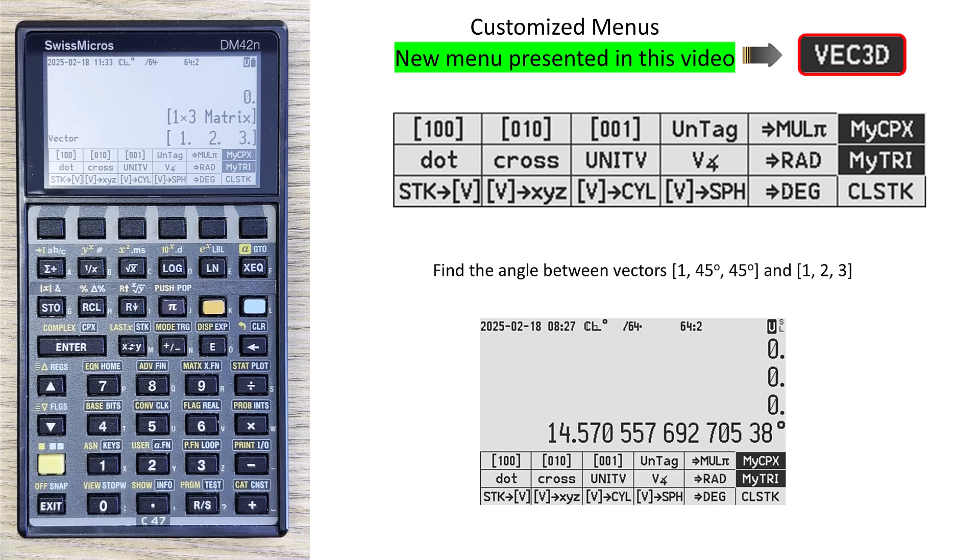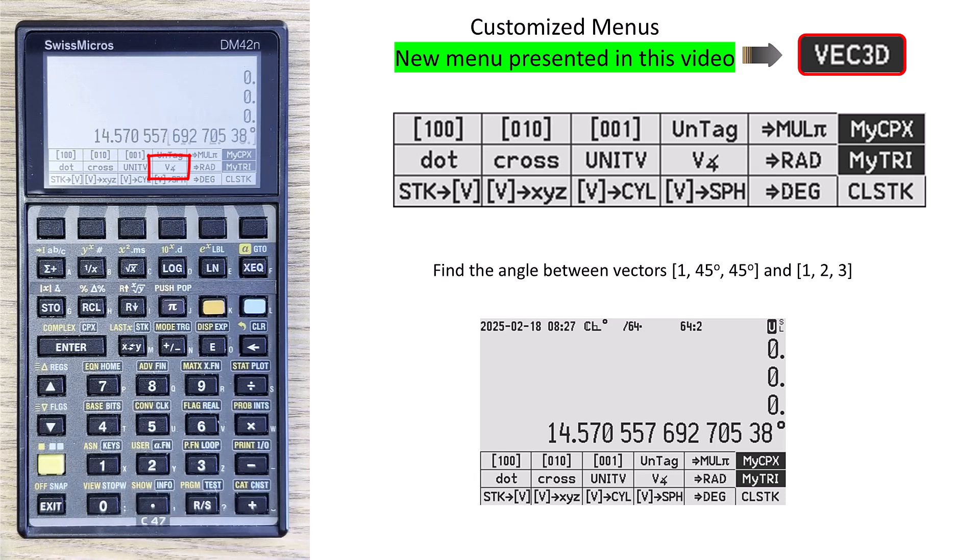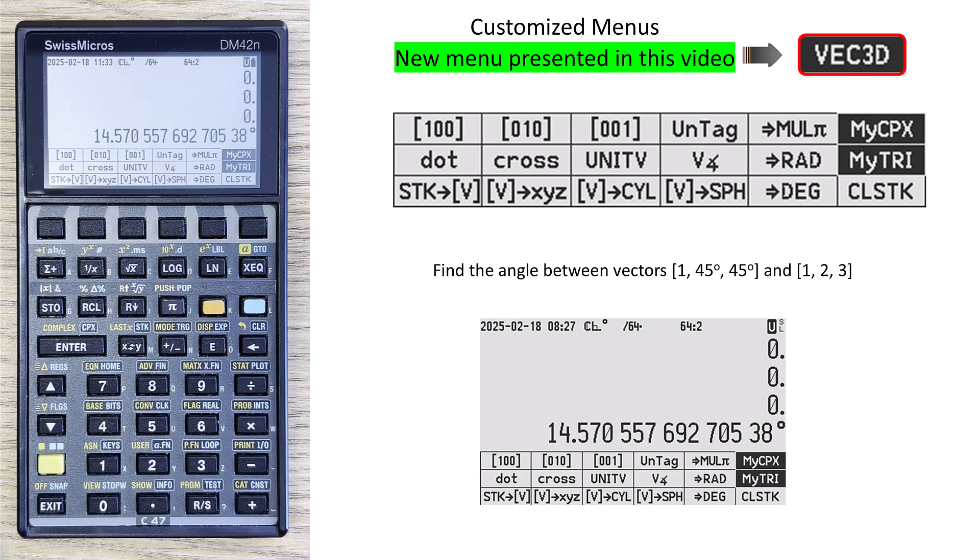And then to find the angle between them, we have this built-in routine to find the angle between two vectors. So I press that, and I get the answer. It's 14.57 degrees.